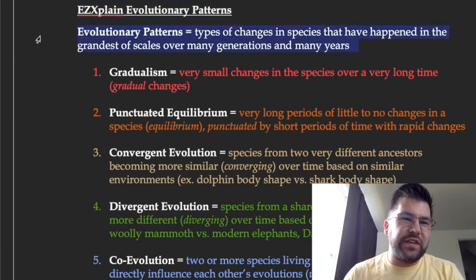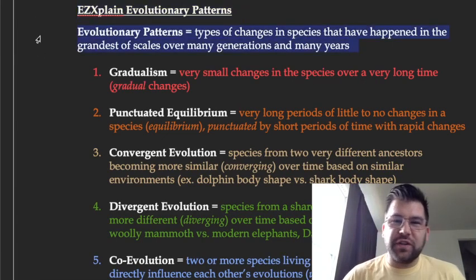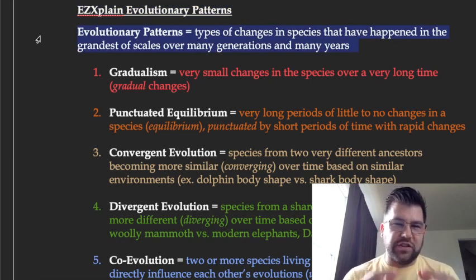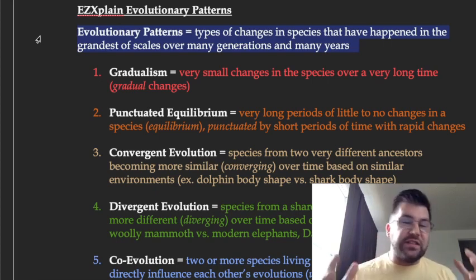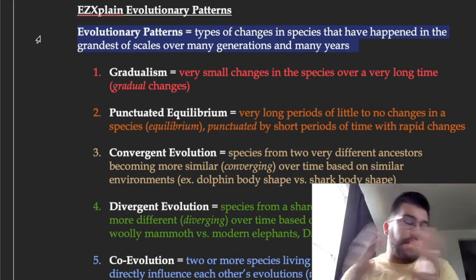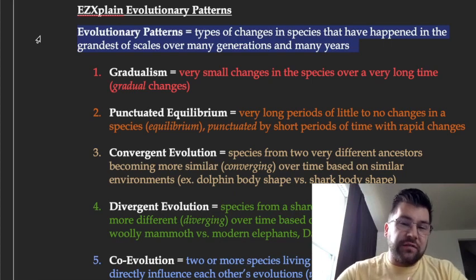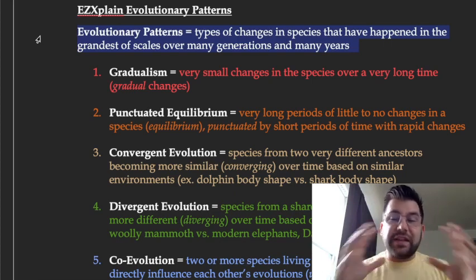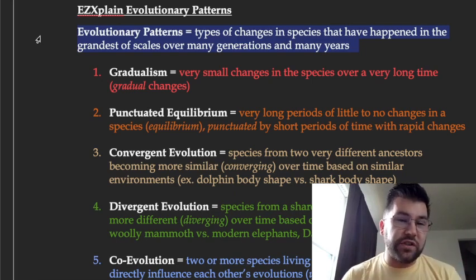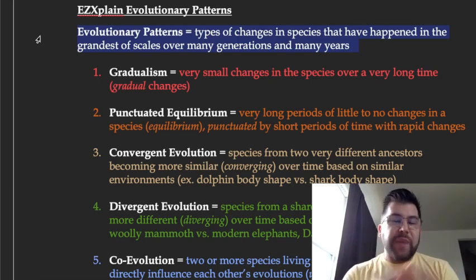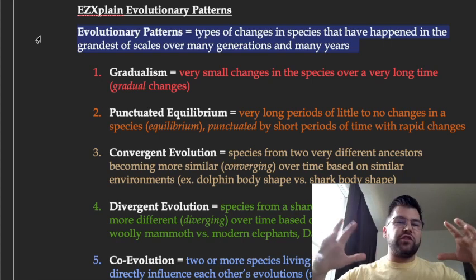So far we've gone over the evolutionary mechanisms, which are looking at how evolution works at the genetic scale, very small scale, just looking at an individual or a population's fitness to their environment. Then we've also looked at speciation, that evolutionary process of how given isolation barriers and a lot of time, we can actually see new species emerge. But now we're going to come to these patterns, these really big picture trends.